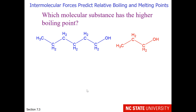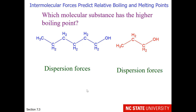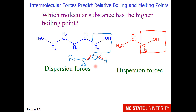For example, we have two structures here. Which molecular substance has the higher boiling point? Well, we can see that both are molecules, so on the left side we have dispersion forces, and also on the right side. To decide if the molecule is polar, let's pay attention to the boxed regions on both molecules.